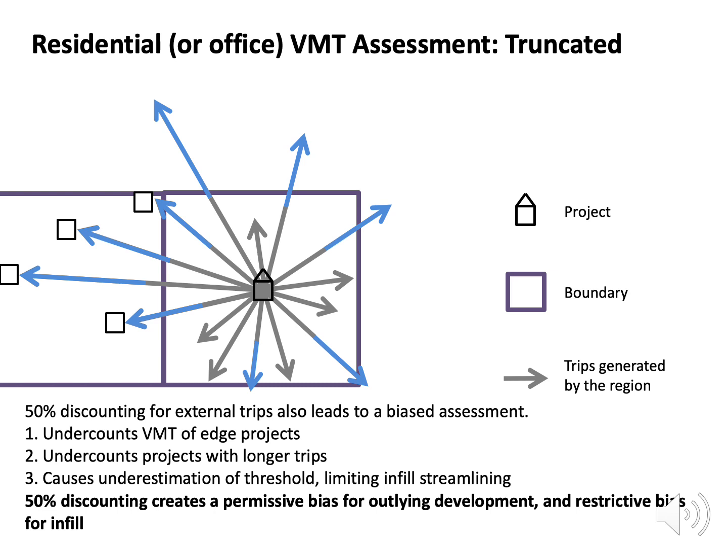In a similar manner, discounting cross-boundary trips — for example, by counting only half of the VMT from such trips — also leads to a biased assessment and biased thresholds. Like truncation, discounting leads to worse undercounting for projects near the edge and projects which generate longer trips, and leads to underestimation of the threshold. These effects also create a permissive bias for outlying development and a restrictive bias for infill.